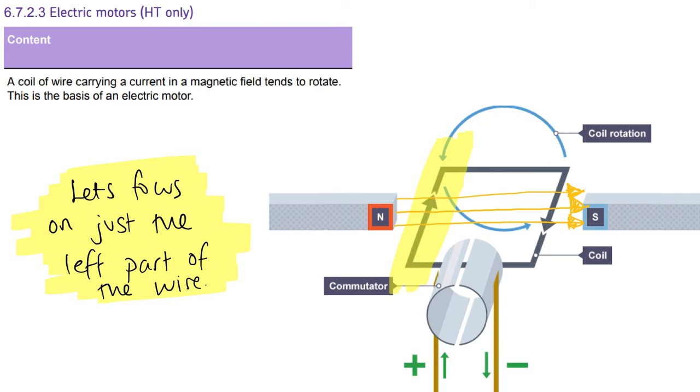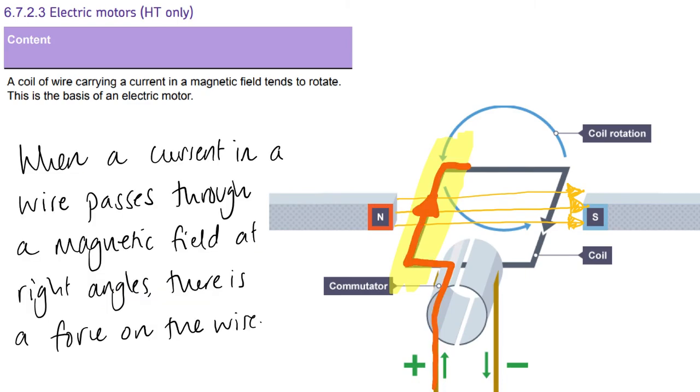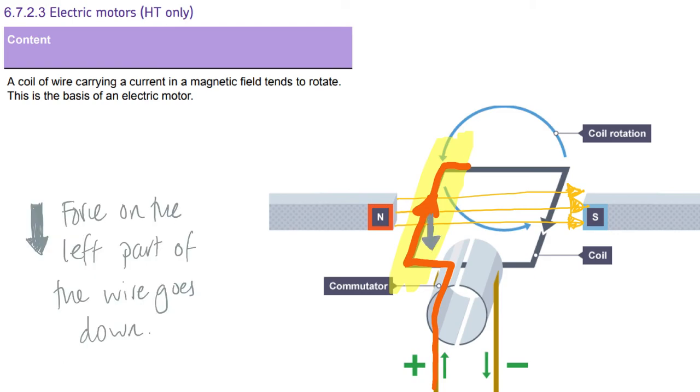So we know the first finger is going this direction. The second finger is going that. So we say the second finger is going into the page. So if you now get your left hand, first finger field, left to right, second finger current into the page, your thumb should now be pointing down. So there's a force applied that causes this part to go in that direction.